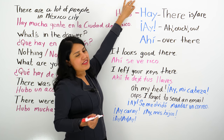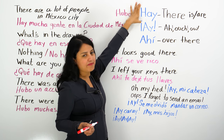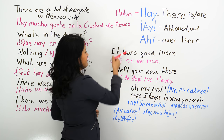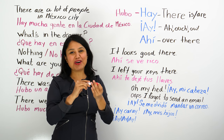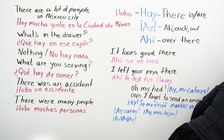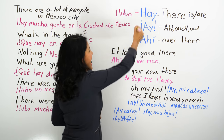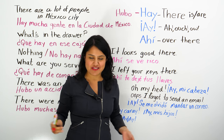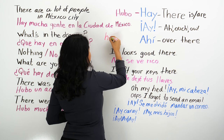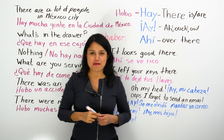We are going to start with probably the most important one of the three. La más importante es 'hay.' My marker died — mi plumón murió. Okay, new marker. 'Hay' es del verbo 'haber.' I'm sorry for the interruption. 'Hay' es del verbo 'haber.'